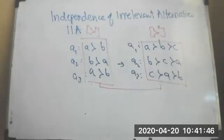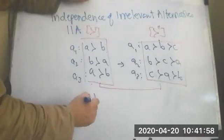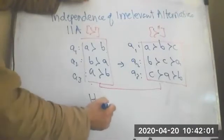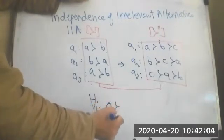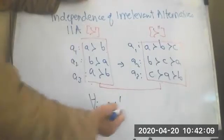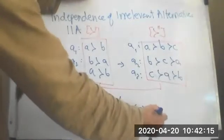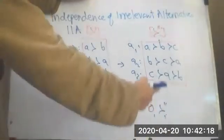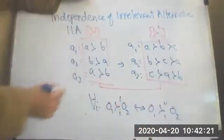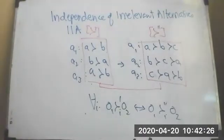How are these two related? These two are related by this relationship: for all agents i, if O1 is preferred by i in profile prime over O2 if and only if O1 is also preferred by agent i in this profile over O2. This is a bi-directional relationship between these two.